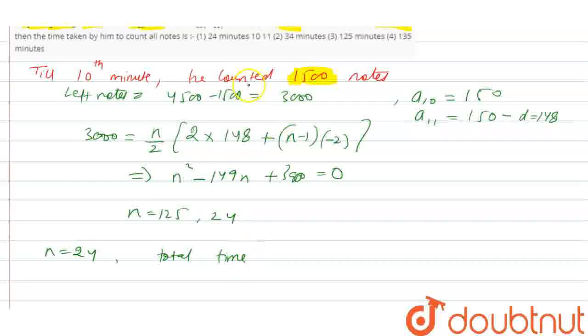The total time will be - till 10th it was 10 minutes, so after 10th it was 24 minutes, so total time will be 24 plus 10, that is 34 minutes.